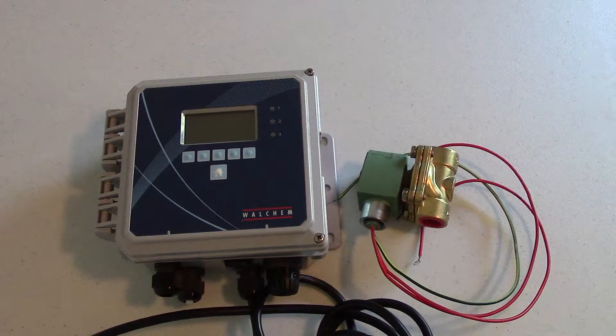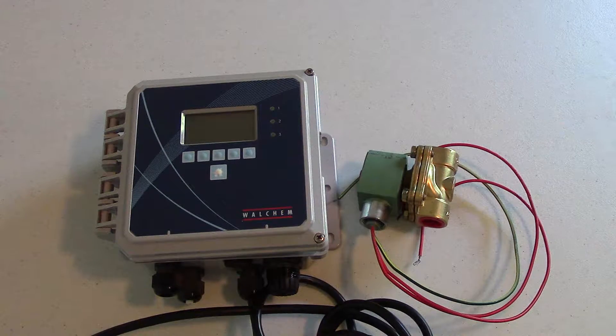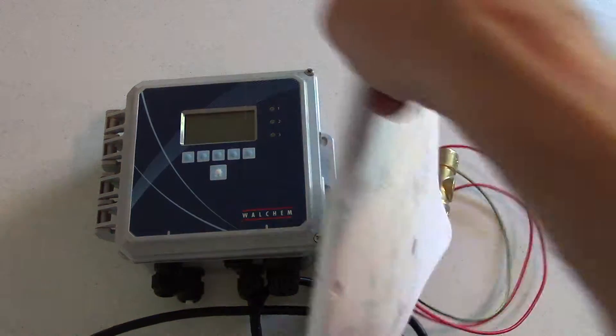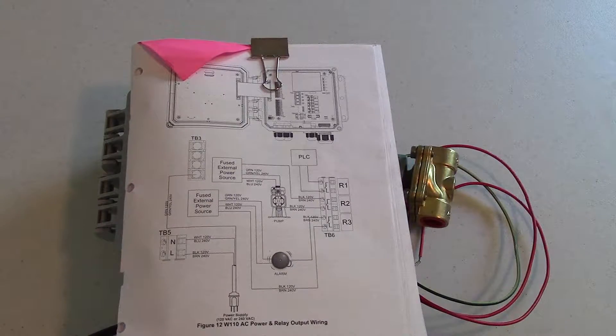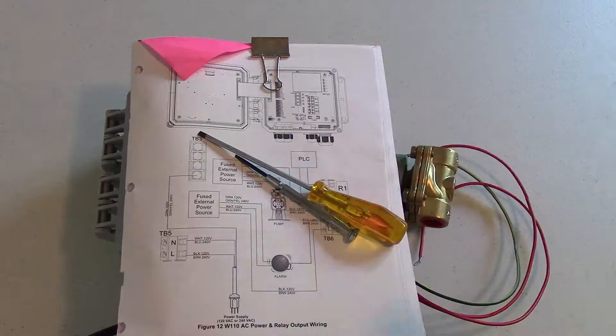In this video I'll show you how to wire the solenoid valve to the W100 controller. For this wiring I'll have a copy of the instruction book and some screwdrivers, small flat head screwdrivers to wire the solenoid valve into the controller.